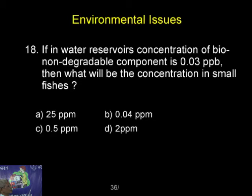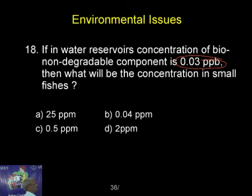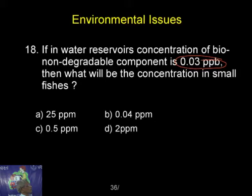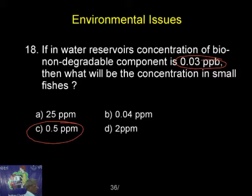If in water reservoirs, the concentration of a bio non-degradable component is 0.03 particles per million, then what will be the concentration in small fishes? The answer is 0.5 ppm. C is the right answer.